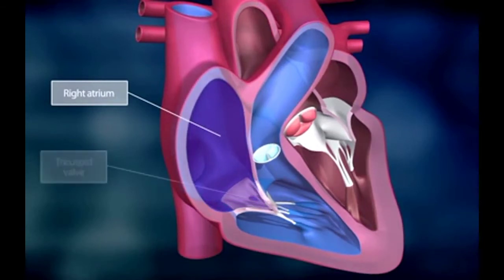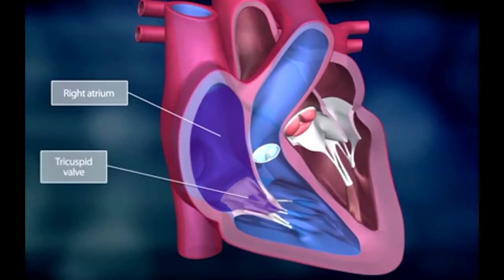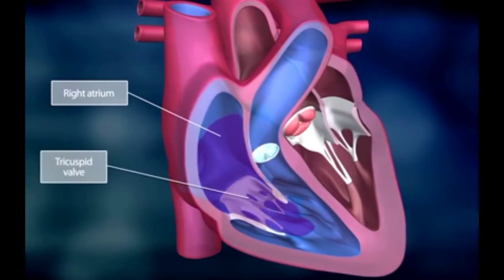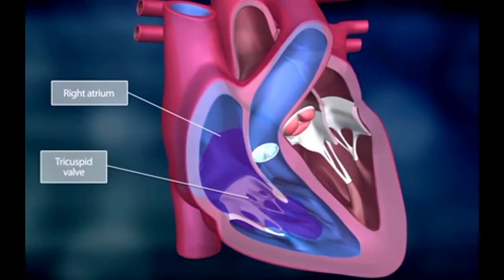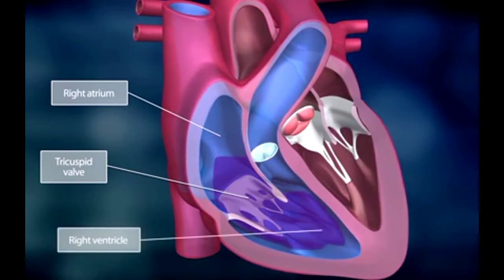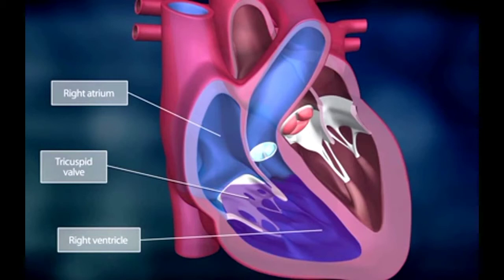When the right atrium is filled with blood, it contracts and the tricuspid valve opens, allowing the blood to flow into the right ventricle. This is called atrial systole.